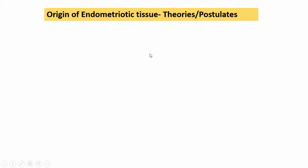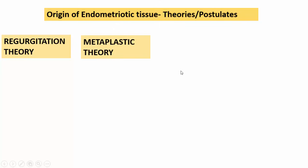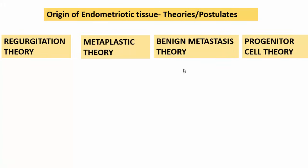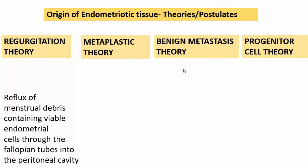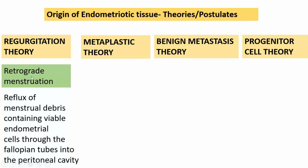Coming to the most important aspect of today's tutorial — pathogenesis of endometriosis — let us see what is the origin of this endometriotic tissue outside the uterus. There are various theories: the regurgitation theory, the metaplastic theory, the benign metastasis theory, and the progenitor cell theory. The regurgitation theory states that endometriotic tissue arises due to reflux of menstrual debris containing viable endometrial cells through the fallopian tubes into the peritoneal cavity — also known as retrograde menstruation.